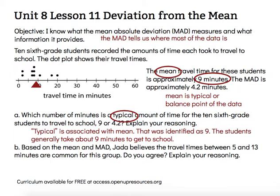Letter B says: Based on the mean and MAD, Jada believes the travel times between five and thirteen minutes are common for this group. Do you agree? Explain your reasoning. Since we've already used the mean, logic tells us to use the MAD. The mean absolute deviation tells us what is most common for this data set, so we're going to be looking at the MAD.